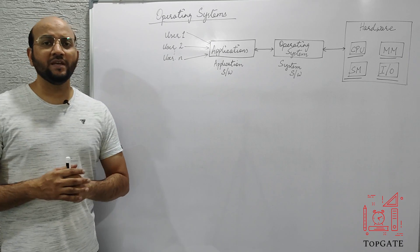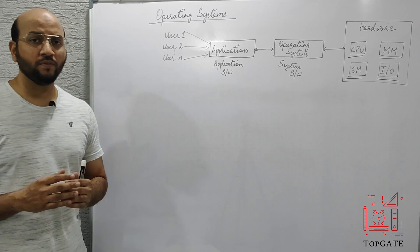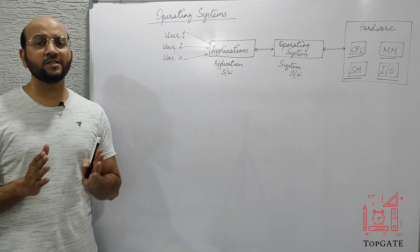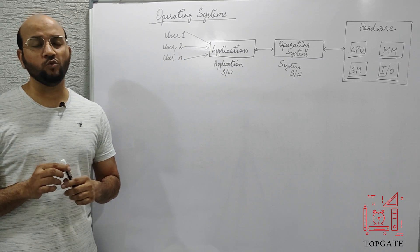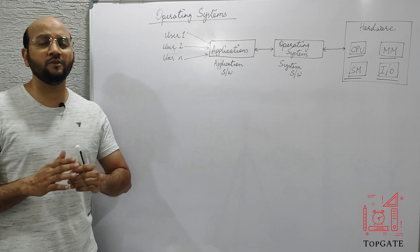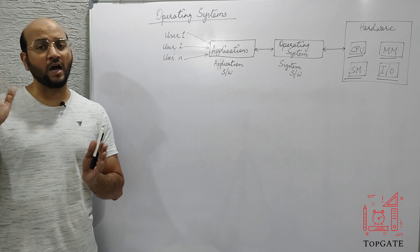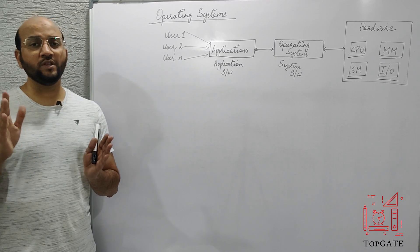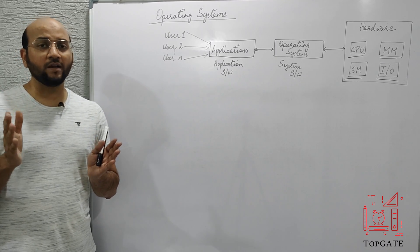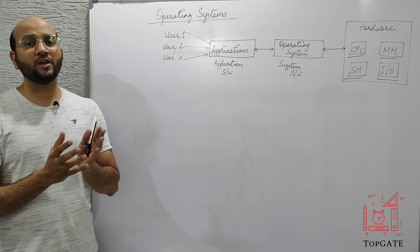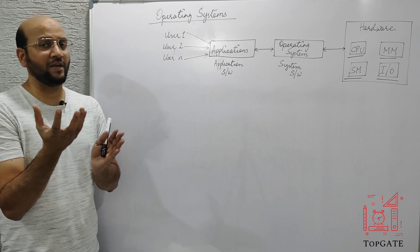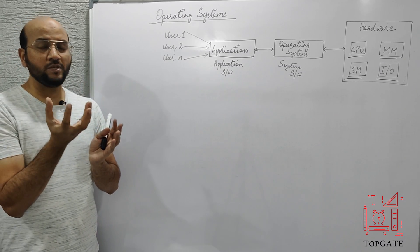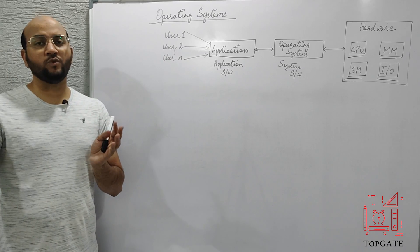If you ask me the definition of operating system, the most general definition I can give you is that the operating system acts as an interface between the user and the hardware. That is, if the user wants to interact with the hardware of the machine, the user cannot interact with the hardware directly. The user has to first interact with some intermediate node between the user and the hardware, and then this intermediate node will in turn interact with the hardware.